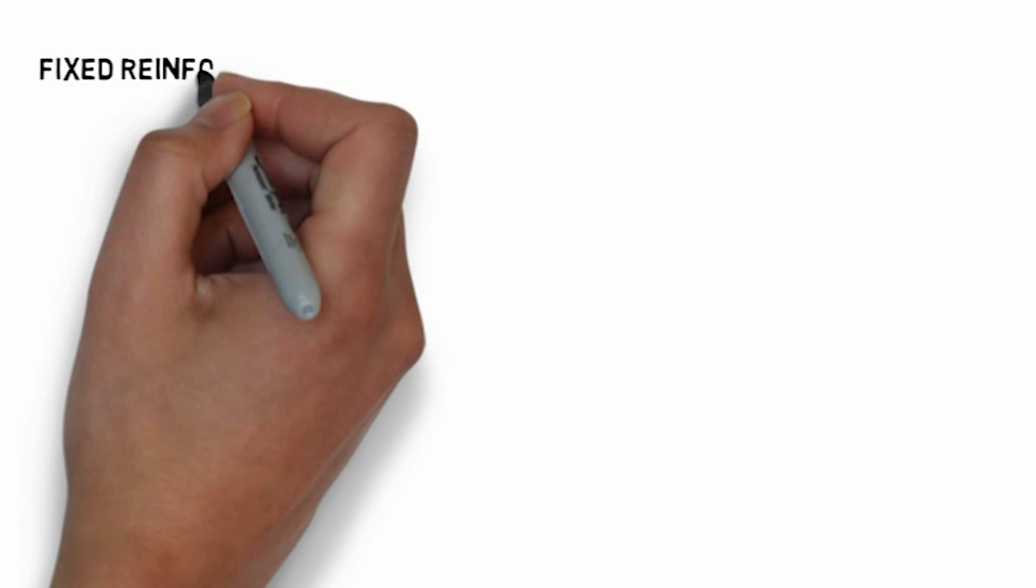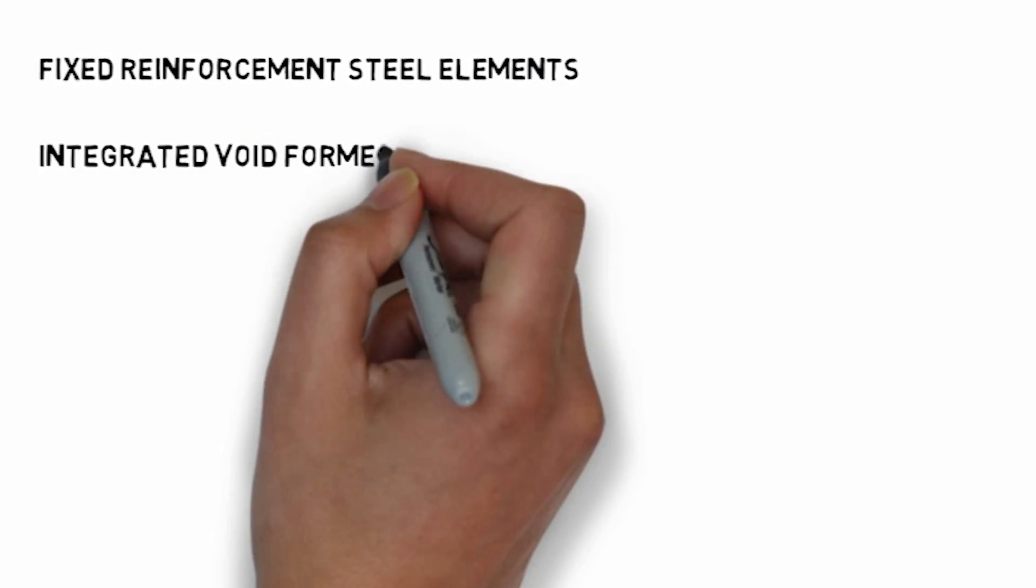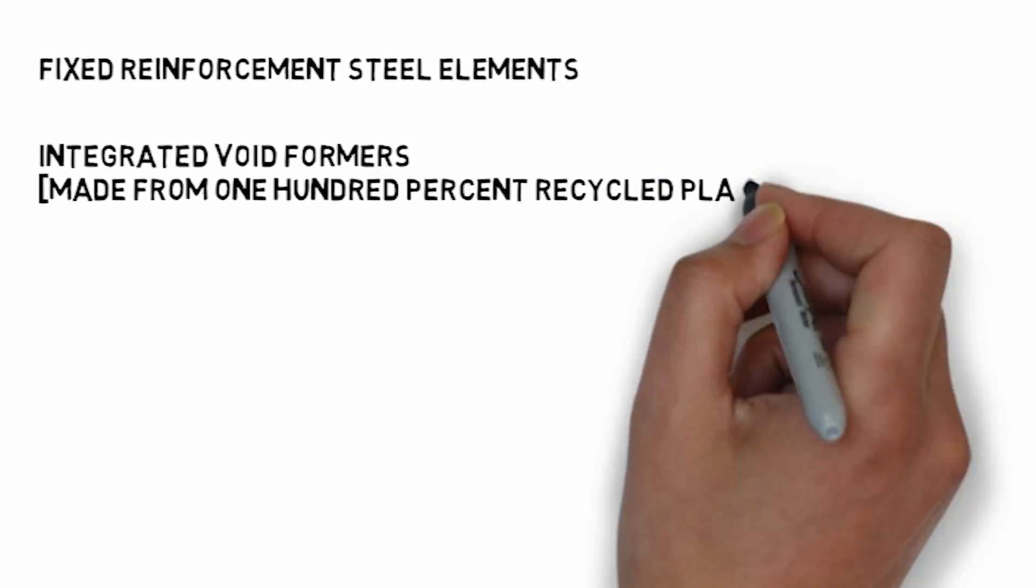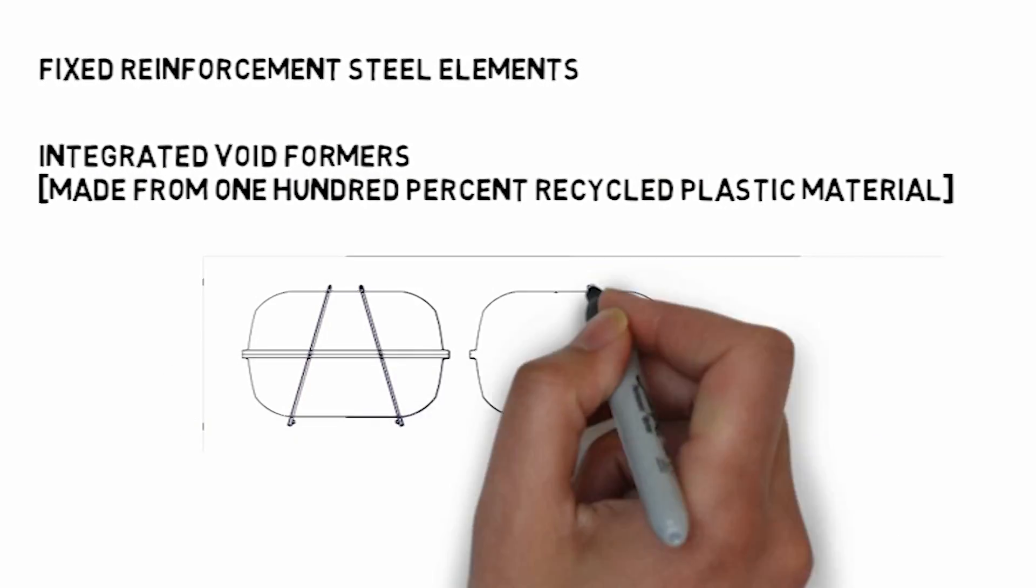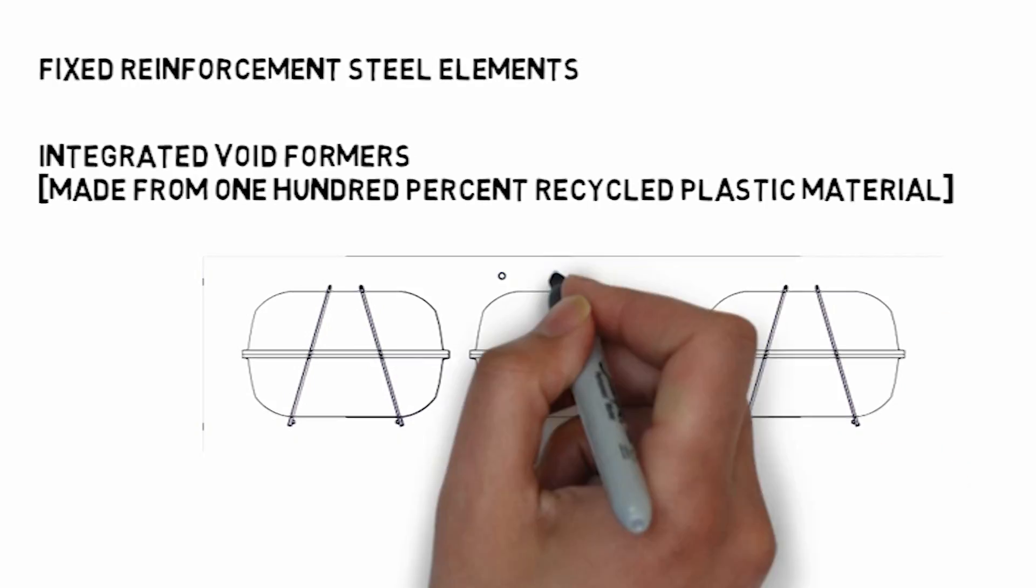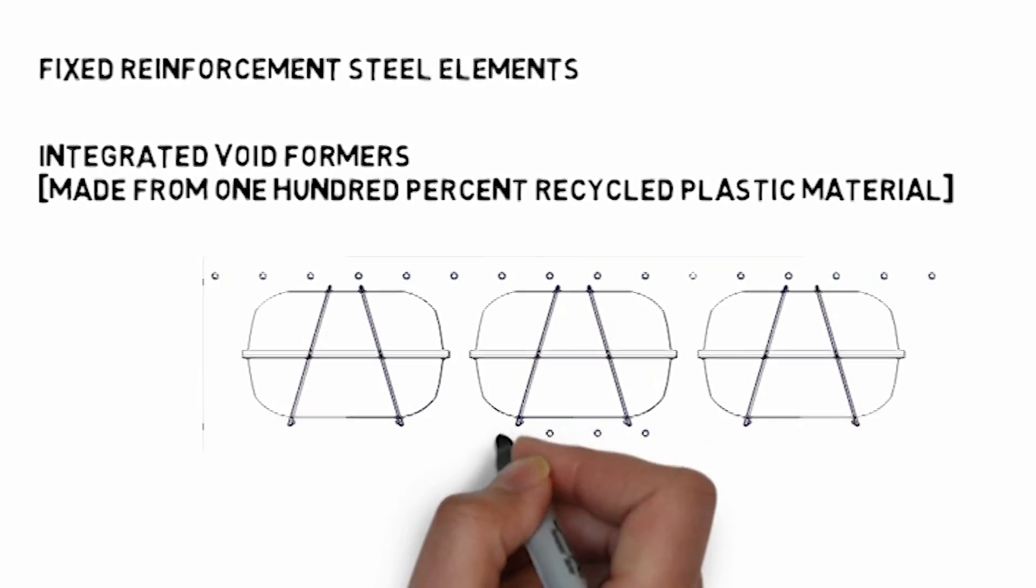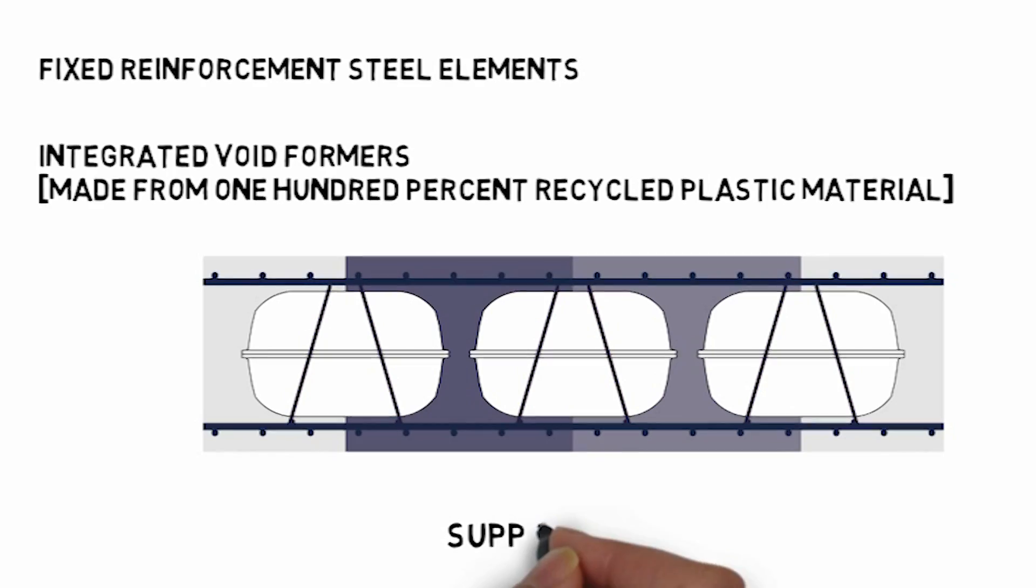Cobiax's void former module consists of fixed reinforcement steel elements which integrate voided formers made from 100% recyclable material. The Cobiax cage modules are positioned between the bottom and top reinforcement layers in the slab cross section, where they also serve as supporting cages.